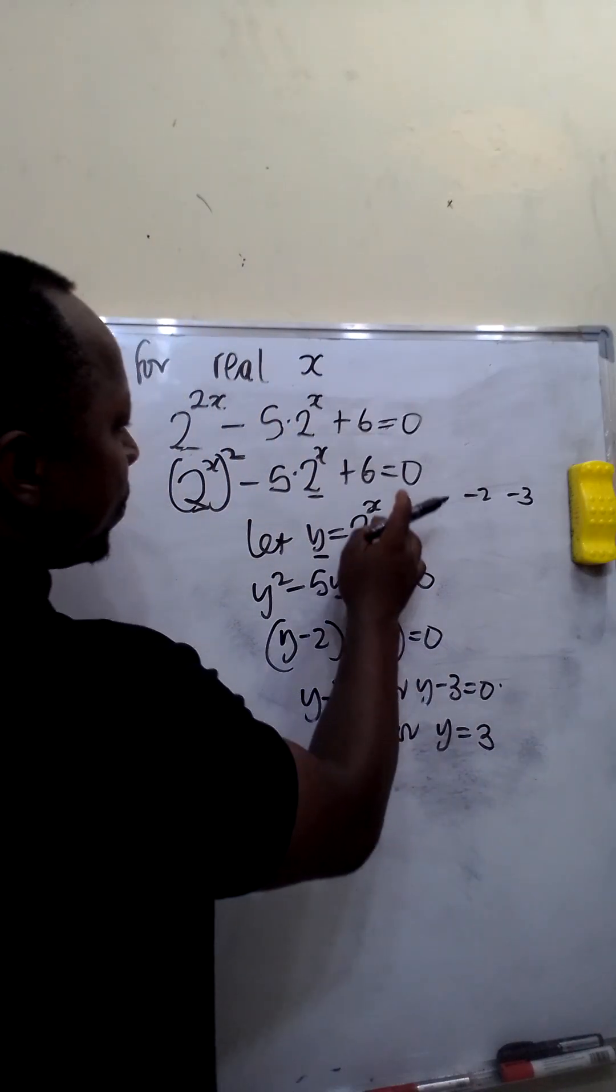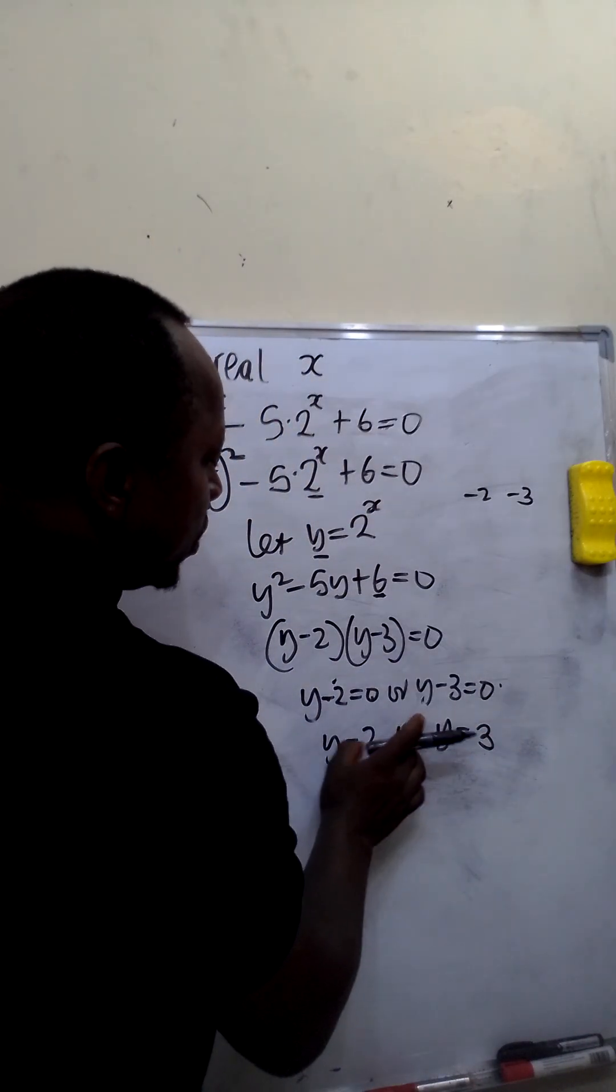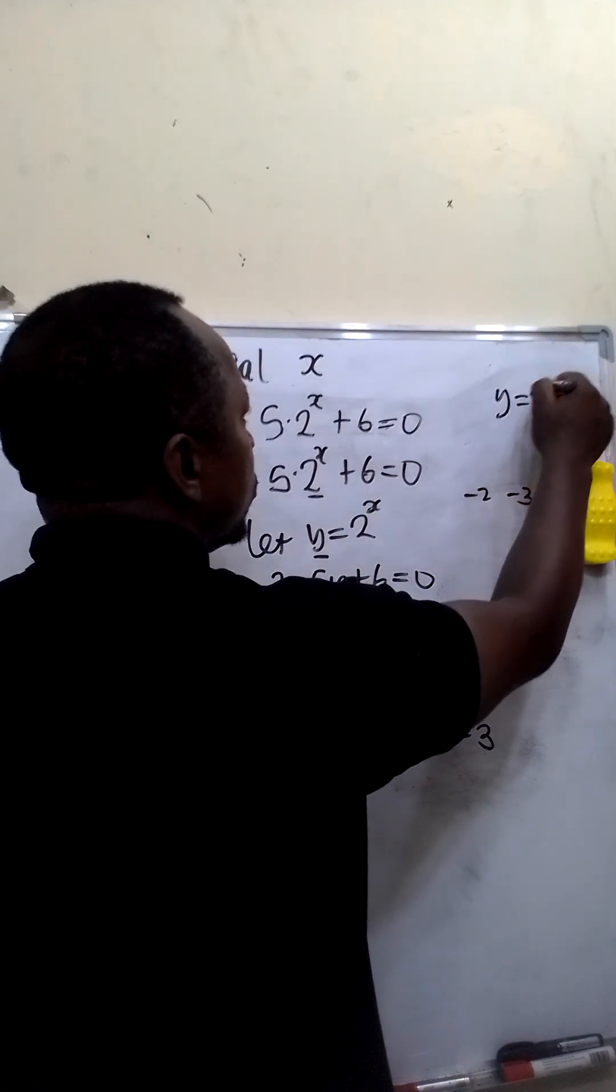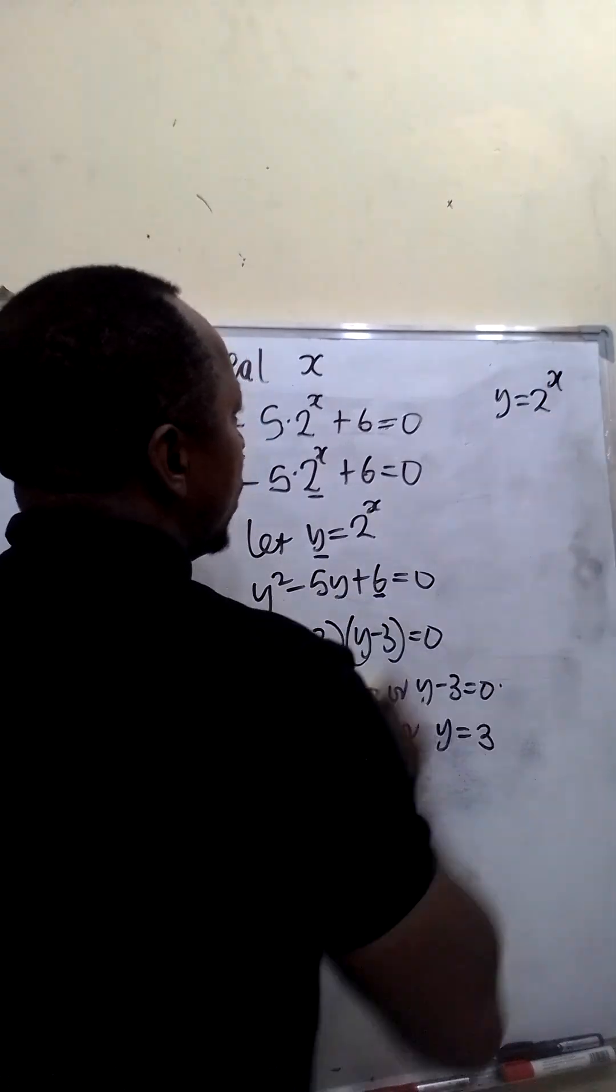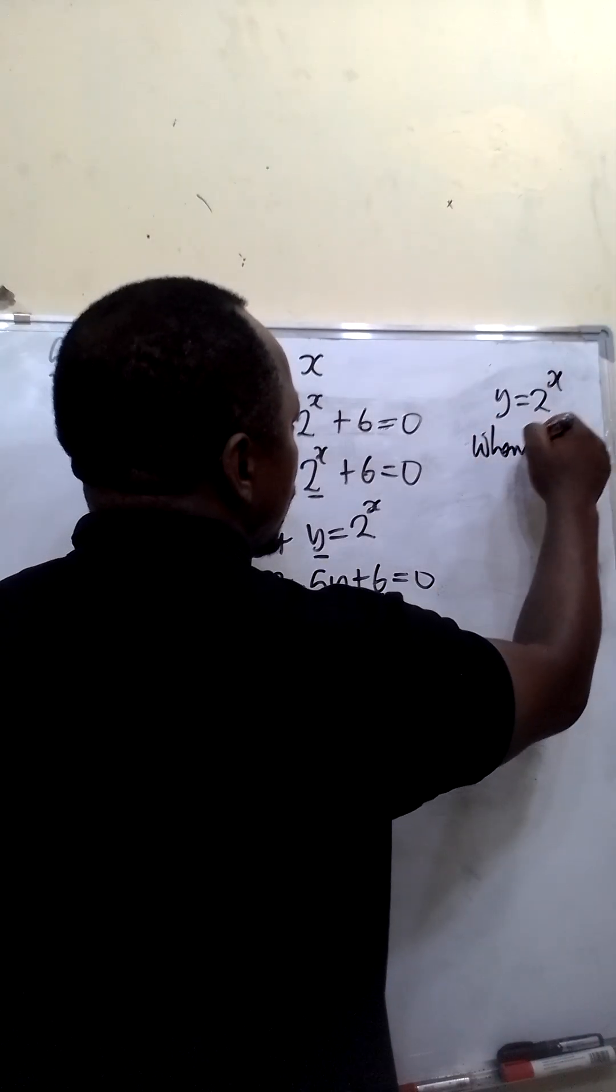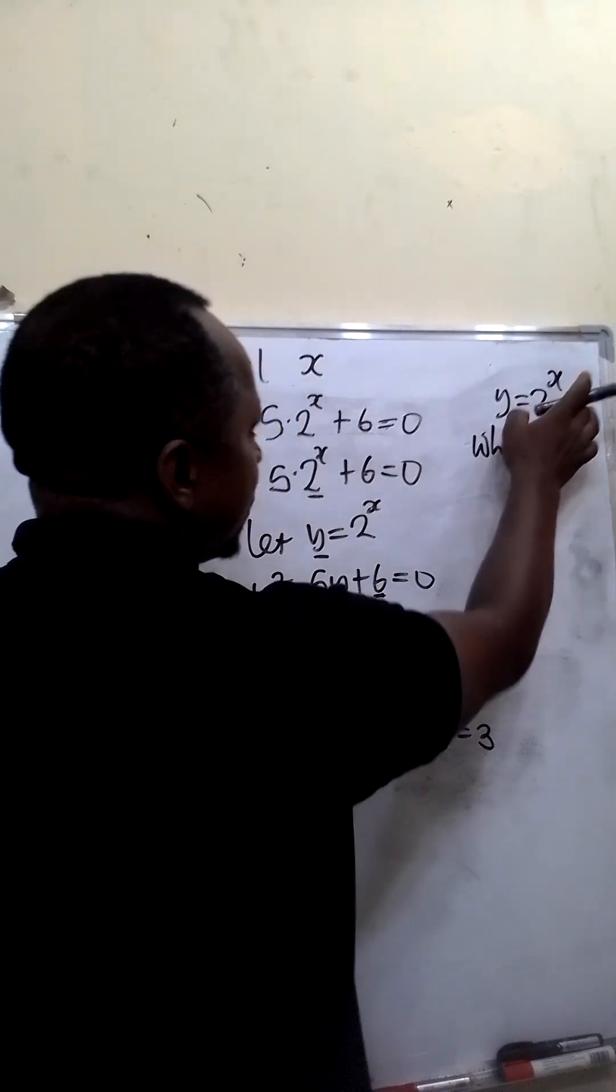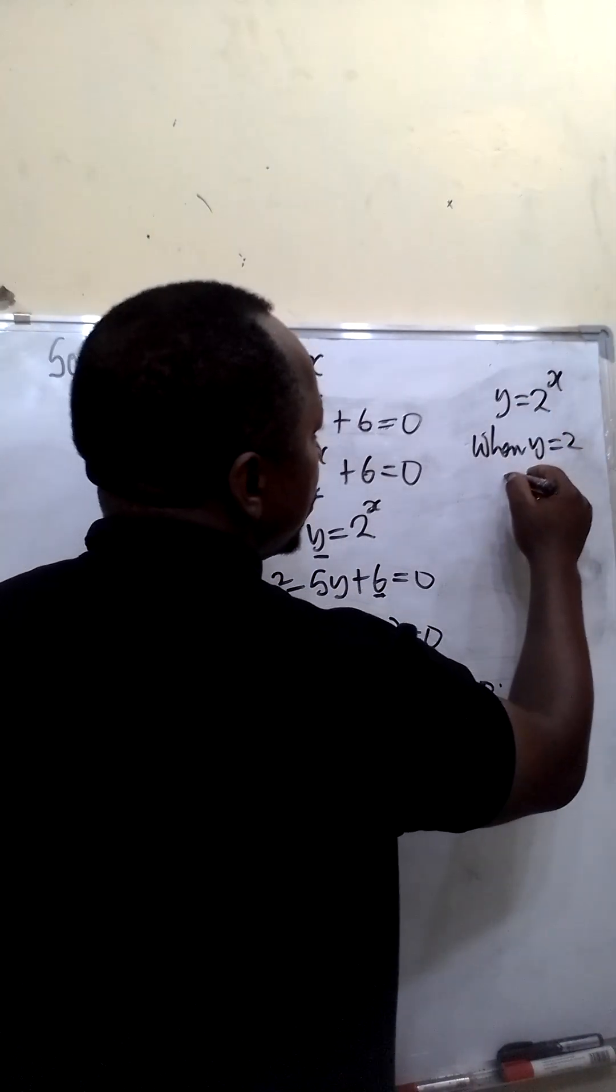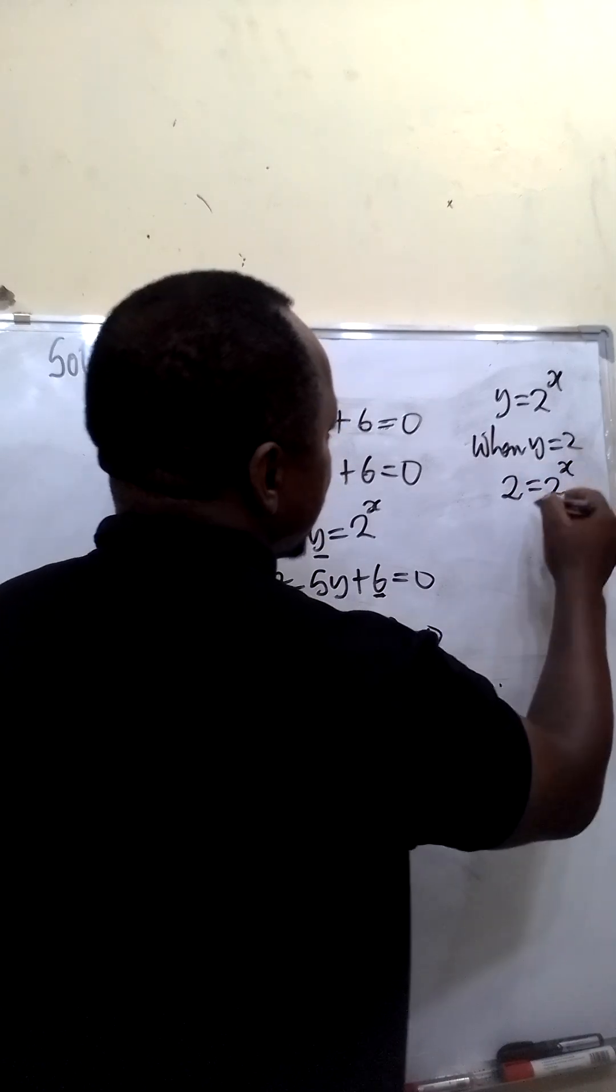Now to get the value of x, we are going to substitute these two values into this equation. Our equation is y equals 2 raised to the power x. Now when y is equal to 2, let's find the value of x when y is equal to 2. So this will become 2 equal to 2 raised to the power x.